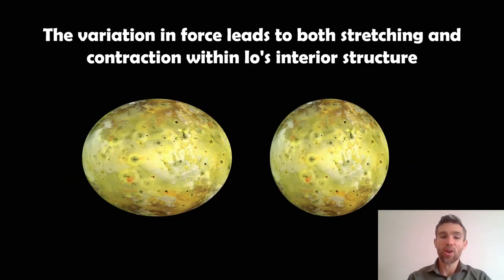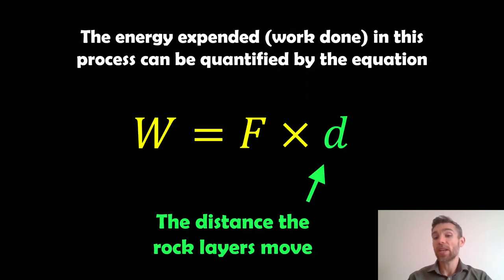So we already, again, know that this variation in force leads to both the stretching and squeezing within Io's structure. So it's going to basically get stretched, then relax back to the more spherical, then get stretched again during the orbit. So knowing that, we can then write the energy expended, or the work done in this process. So the work done, W is equal to the force times the distance. Now, this is the distance that the rock layers are moving. So as it's being stretched, when the tidal force is the greatest, then the distance that the rock layers move will be d. And we already know what the force is. So we can calculate the energy expended from that.